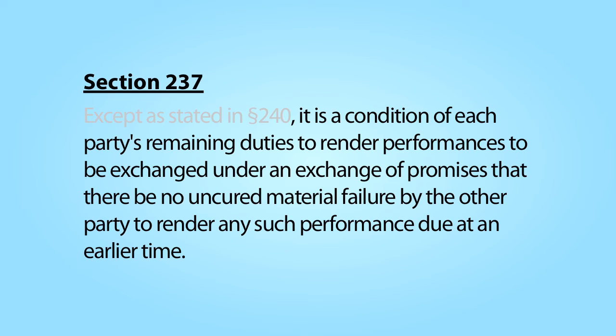This is where constructive conditions enter the picture. Section 237 of the Restatement of Contracts sets forth one of the most important constructive conditions in contract law. That section creates a constructive condition to the effect that, in a bilateral contract, each party's future performance obligation is contingent on there being no uncured material breaches of the other party. In other words, if one party materially breaches a contract, the non-breaching party's further performance obligations are suspended. If the breach is not cured or otherwise excused, then that party will be considered to have totally breached the contract, and the non-breaching party can terminate the contract and walk away.